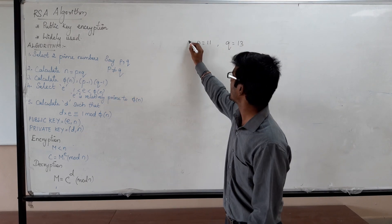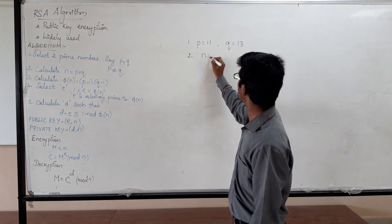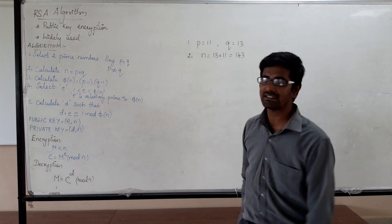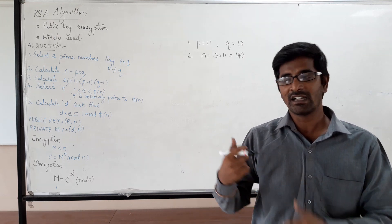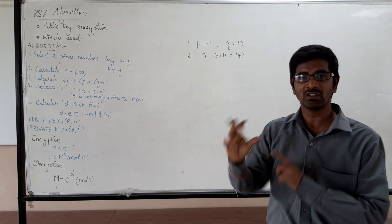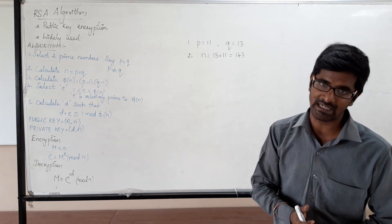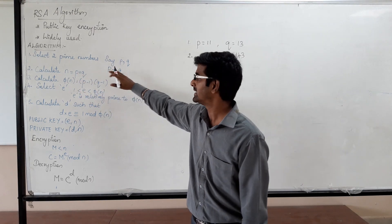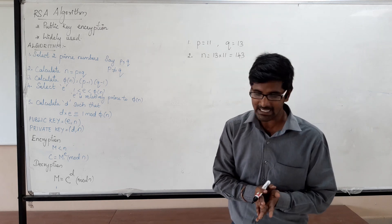The next step is to calculate N. It is the product of the two prime numbers, so N is equal to 13 into 11, which is equal to 143. Step 1 is selecting two large prime numbers P and Q, and step 2 is calculating N where N is the product of P and Q.